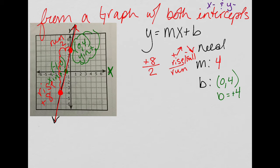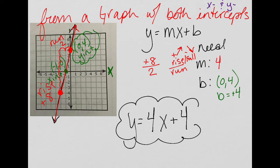Now I have everything I need to write my equation: y equals m, which I found to be 4, x plus b, and we found b to be a positive 4. This would be the equation in slope-intercept form of this linear graph.